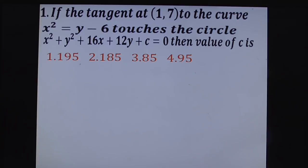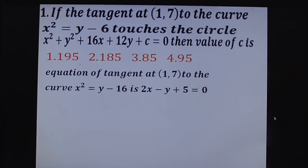First find the tangent at (1,7) to the curve. You can easily find that the tangent at (1,7) to the curve is 2x - y + 5 = 0.